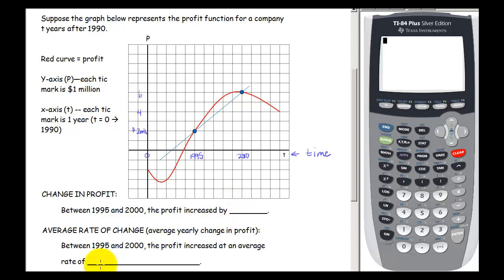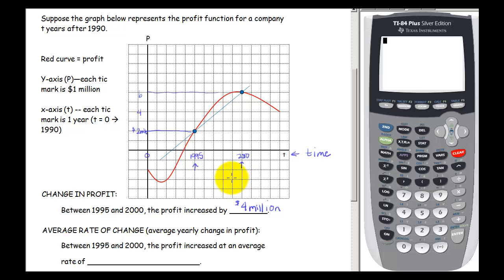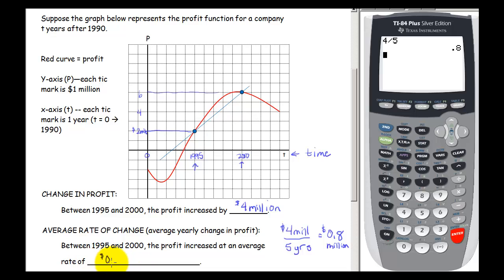Let's figure out how much profit increased between 1995 and 2000. In 1995, profit is at two million, and in 2000 it's up at six million. So the change in profit over those five years is four million dollars. If we average that over five years to find the increase per year, we take four million divided by five years, which gives us 0.8. So between 1995 and 2000, profit increased at an average rate of 0.8 million dollars per year.